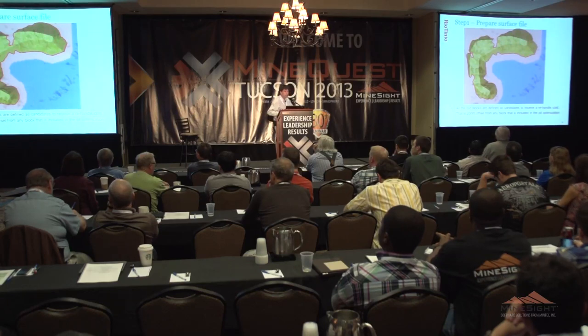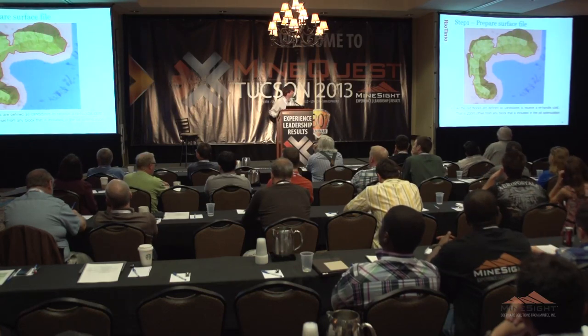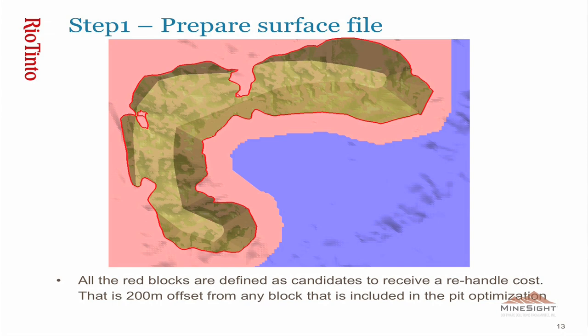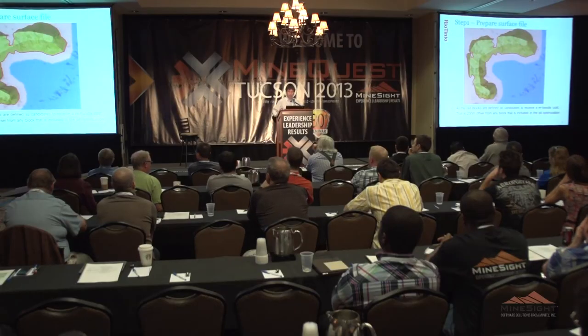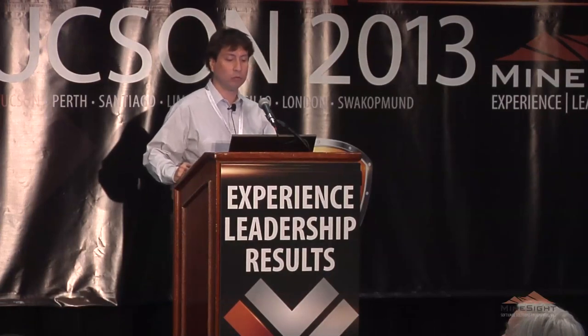The first step is to prepare the surface file. Basically we create a grid surface file and choose which blocks will be candidates to receive the re-handle cost, creating a limit around the dump. All the red blocks are candidates to receive the re-handle cost, and the blue ones will have no re-handle cost at all. The item added to file 13 will be the re-handle cost — RH possibility one, meaning it is possible to receive re-handle.